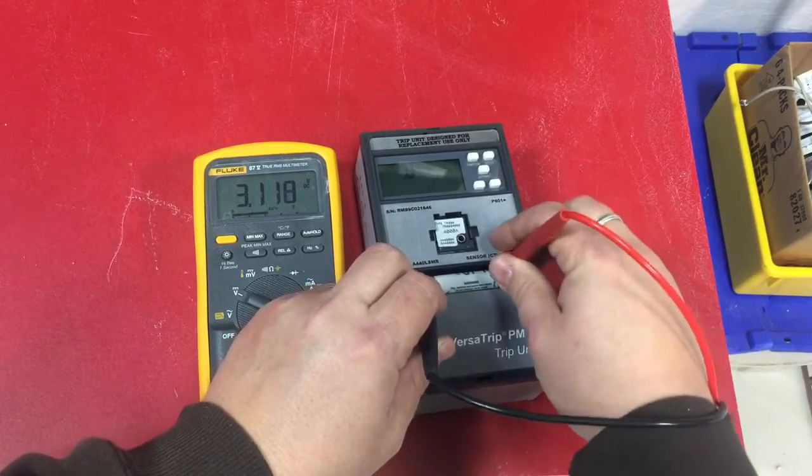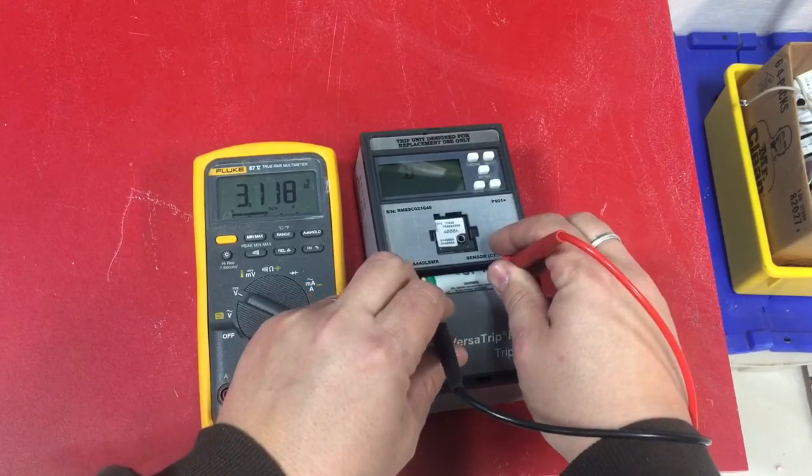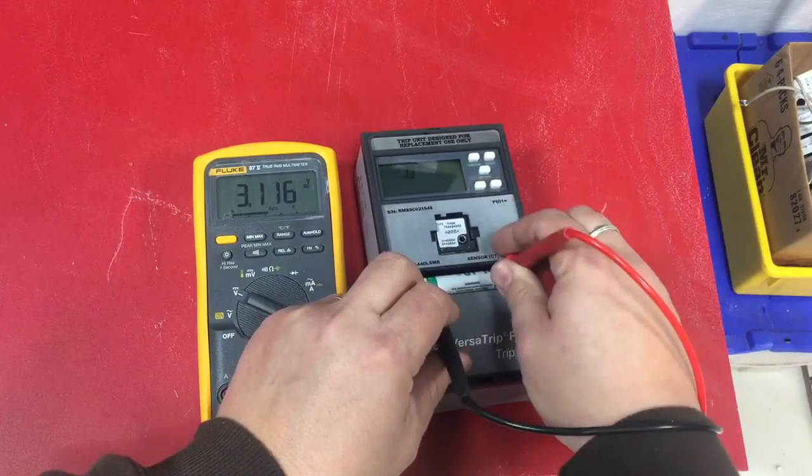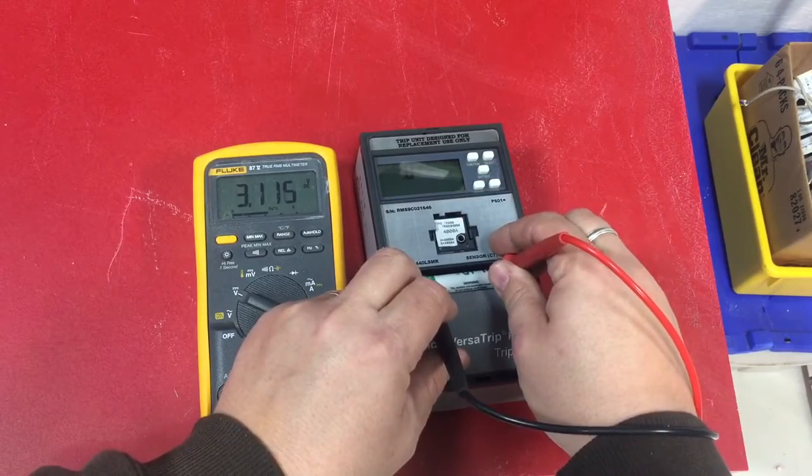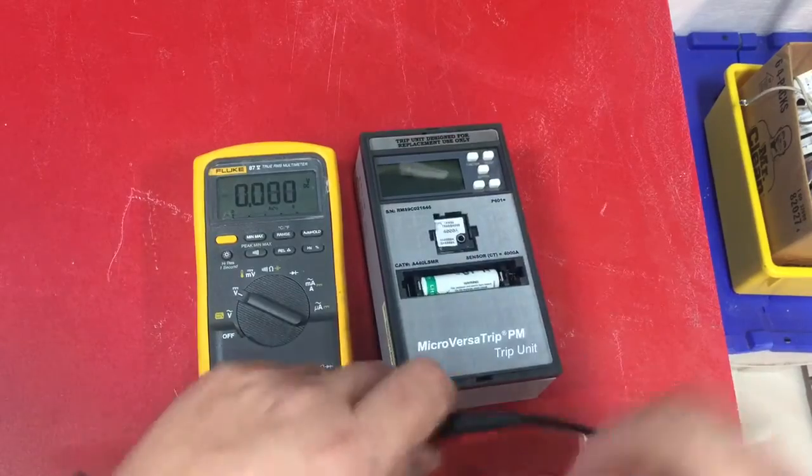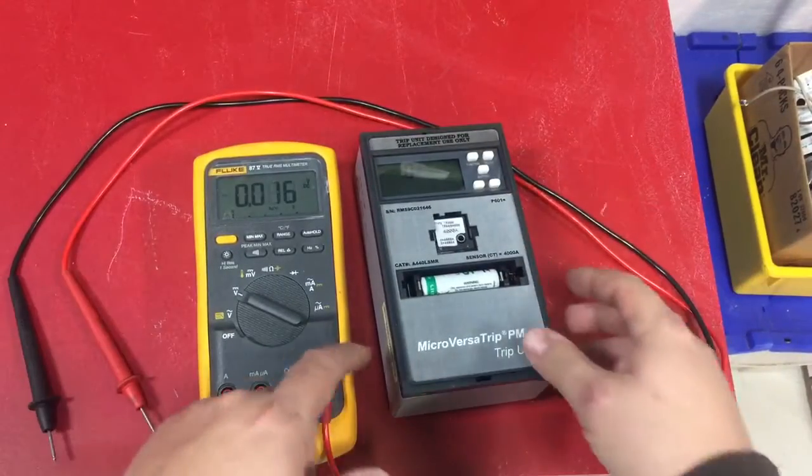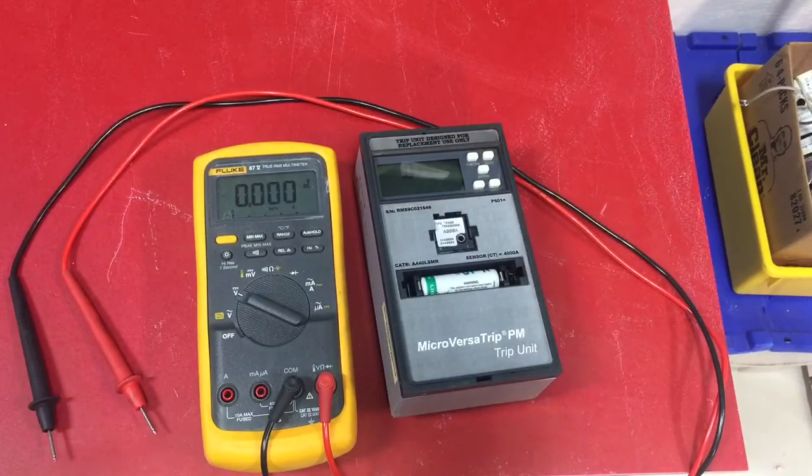You can see this one even drop down to 3.1 volts while it's powering the meter right now. So that's it - that's one quick check to see if your battery is good or bad.